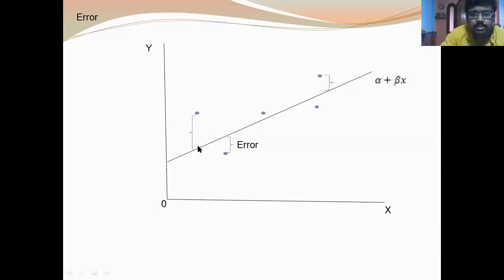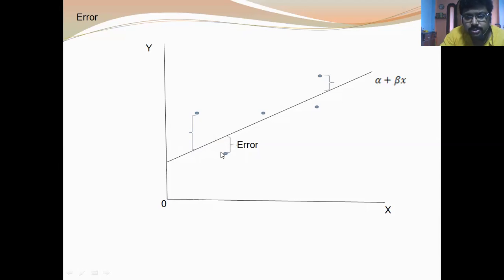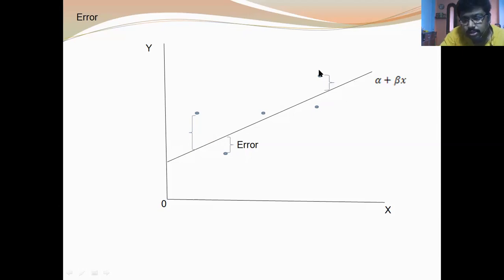The point on the true line and the point off the true line — this difference is called the error. It represents the error because one value is off the line and the other is on the line; the difference between the point on the line and the point off the line is the error. This is the true line — you must remember that.